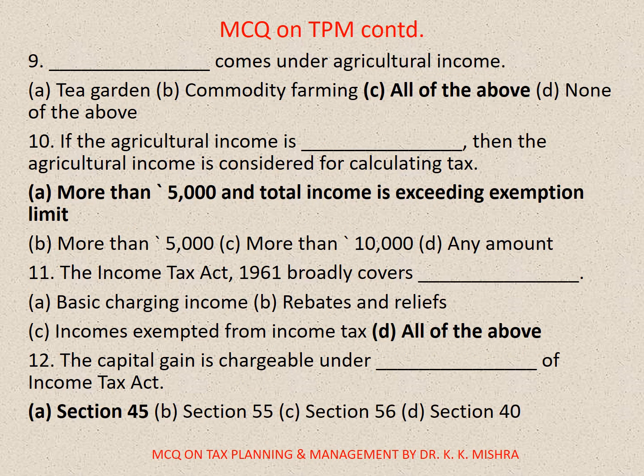Question number 9 covers what comes under agricultural income. Question number 10: If the agricultural income is more than 5,000 and total income is exceeding the exemption limit, then the agricultural income is considered for calculating tax. This is the correct option.